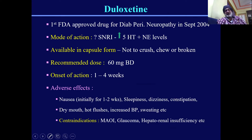Duloxetine is the first FDA-approved drug for diabetic peripheral neuropathy. Its mode of action involves increasing serotonin (5-HT) and norepinephrine levels. It is available in capsule form and should not be crushed, chewed, or broken. The dose is 60 mg twice daily with onset in 1 to 4 weeks. It can cause nausea and sleepiness, and is contraindicated in patients on MAO inhibitors, with glaucoma, or with renal insufficiency.